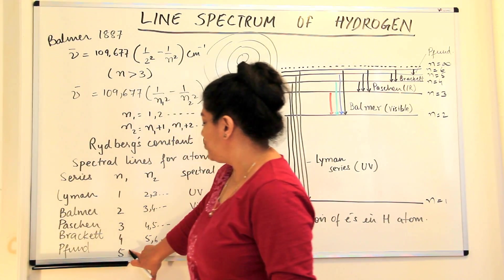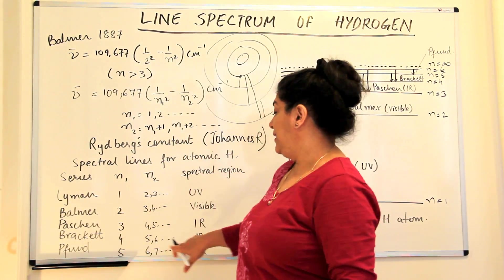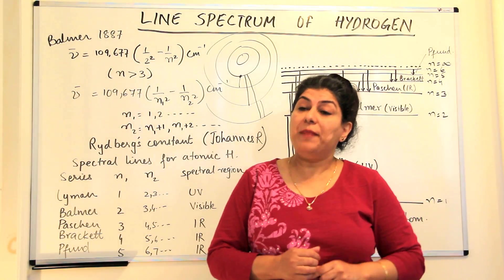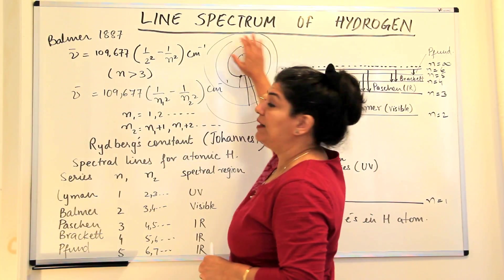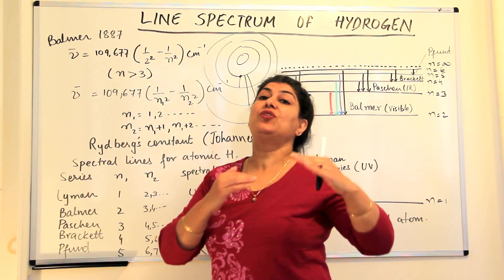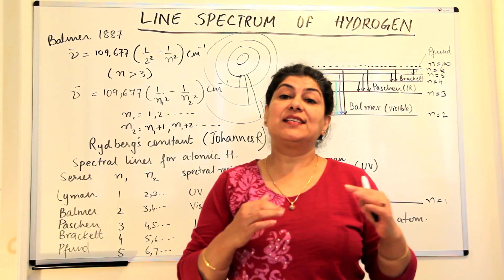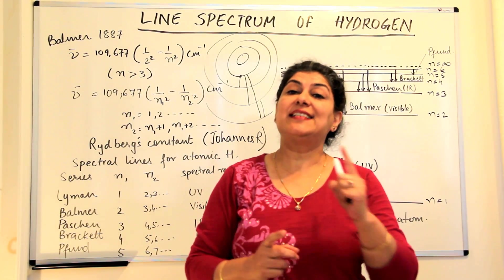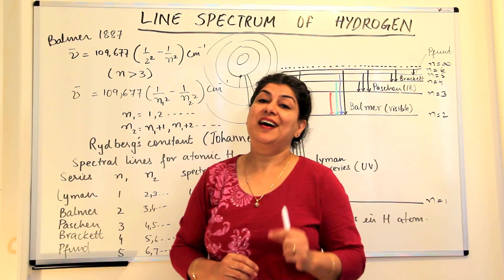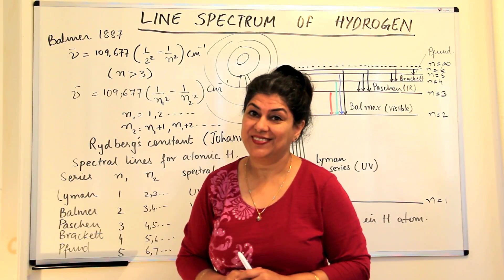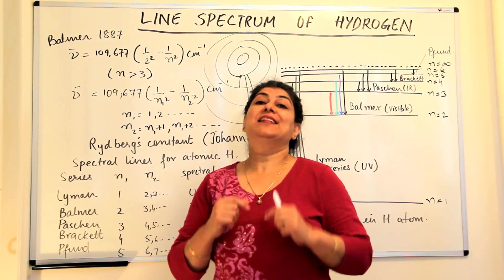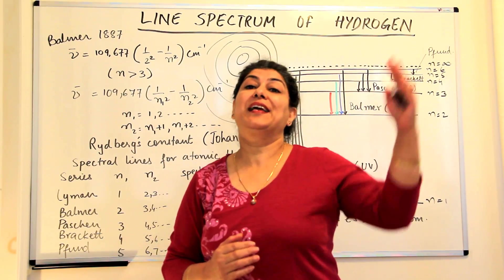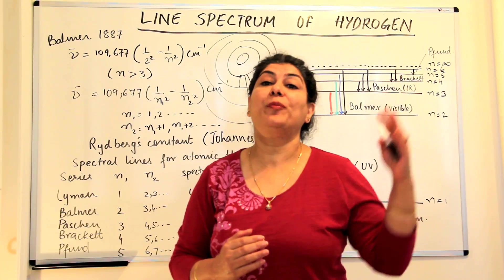So Bohr now imagined the atom to have quantization of energy levels, and it was on this idea of quantization of energy levels that he gave his model of the hydrogen atom. This was again another step towards the quantum atomic model.